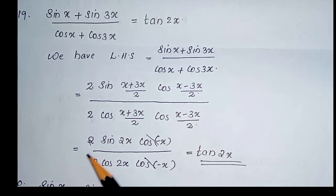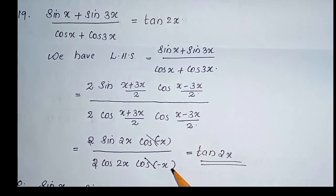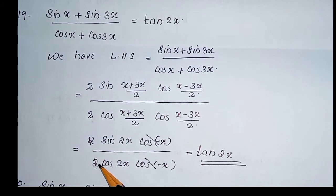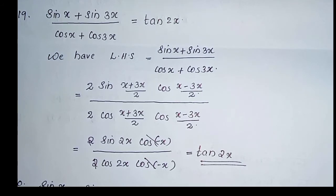That is equal to 2 sin 2x cos(minus x) divided by 2 cos 2x cos(minus x). Here, cos(minus x) is common to both numerator and denominator, and 2 and 2 are also common. We can cancel these common terms. We got sin 2x divided by cos 2x, that is equal to tan 2x. That is RHS.